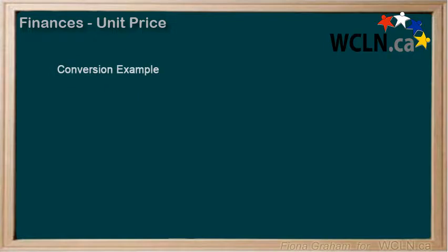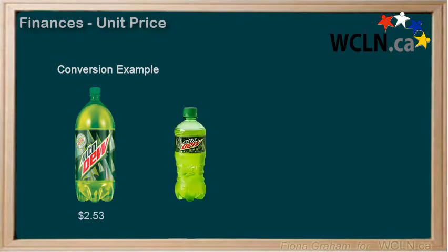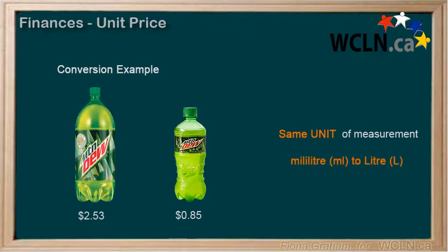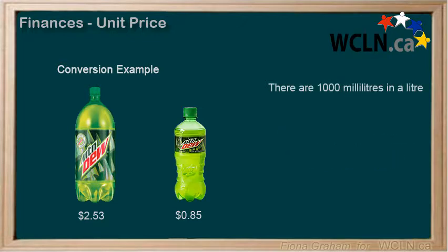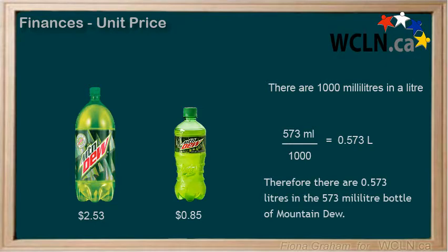Let's say you're looking at the cost of Mountain Dew. A 2.75-liter bottle costs $2.53, whereas a 573-milliliter bottle only costs $0.85. We have to convert the quantities to the same unit of measurement. For this example, we will convert the milliliters to liters. There are 1,000 milliliters in a liter, so we divide 573 by 1,000 to get 0.573. Therefore, there are 0.573 liters in the 573-milliliter bottle of Mountain Dew.